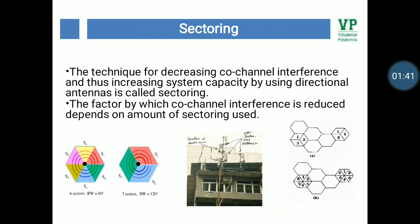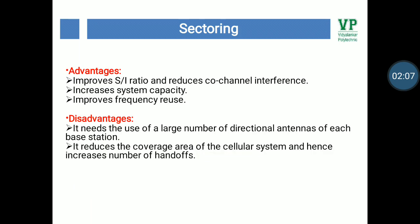Now let us understand sectoring. The technique for decreasing co-channel interference and thus increasing system capacity by using directional antennas is called sectoring. The factor by which co-channel interference is reduced depends on the amount of sectoring used. A cell is normally partitioned into three 120-degree sectors or six 60-degree sectors, as shown in the figure.